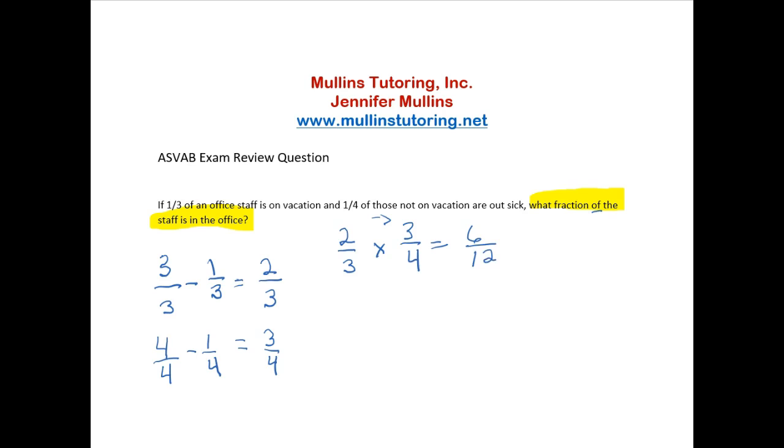On the ASVAB exam, they will want you to simplify. So I want to look for the common factor for six and twelve. Well, the greatest common factor for both of these numbers is six.